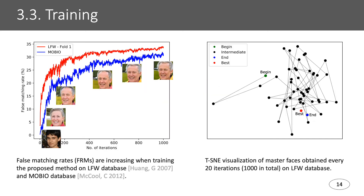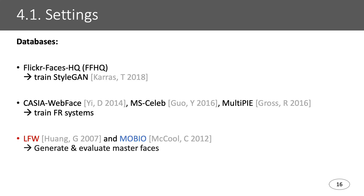Here are two visualizations of the training progress. The first one is the false matching rate and the second one is the t-SNE visualization of the master faces obtained every 20 iterations. For the false matching rate, it changes significantly in the beginning steps and then gradually converges, so the identities of the faces in the first steps are different, but in the last steps they only slightly change. The same thing happens with the t-SNE visualization: in the beginning it is fluctuating and goes everywhere, but at the end it just moves around the best master faces with the best scores.